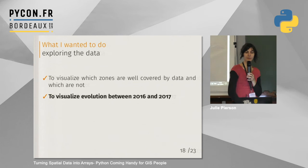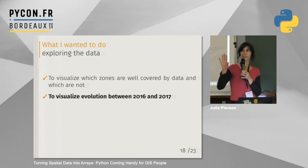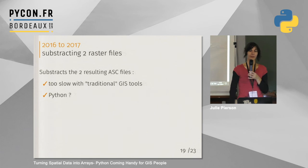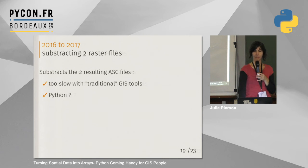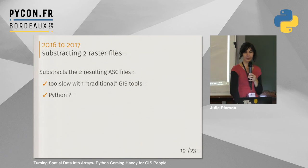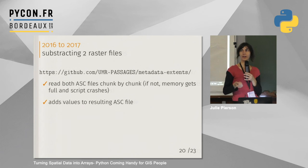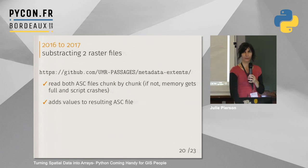The second thing I wanted to talk about: now I have raster pictures and I want to compare two pictures for two dates — 2016 and 2017. Again I tried with traditional GIS tools — it was too slow because the raster files were very big. So I tried with Python. The job was to subtract two arrays, which is quite simple. But I had a problem: I understood I should not store the whole file in memory because my computer crashed. I had some trouble reading only chunks of the files, but I got a friend to help me and it worked.